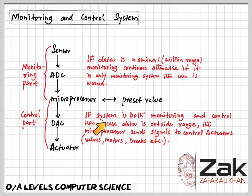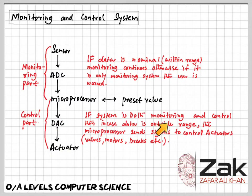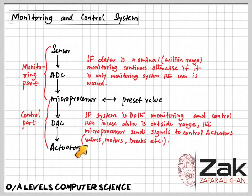If the system is both monitoring and control, then in the case where data is outside the range, the microprocessor sends a signal to control the actuators.